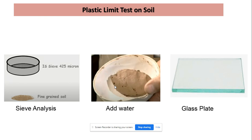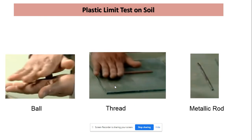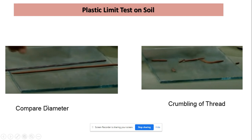We take a small amount of soil from the sample, first form it into a ball between our hands, then place this ball on the glass plate and start rolling it to make a thread. We have a metallic rod of 3 mm diameter and compare the thread diameter against this rod repeatedly to check whether the thread has reached 3 mm diameter.